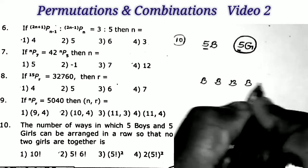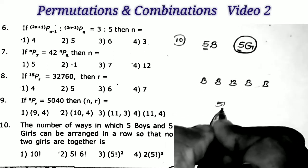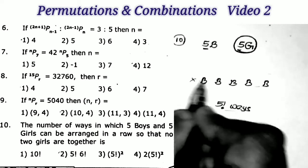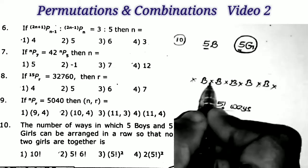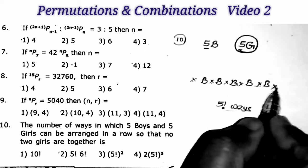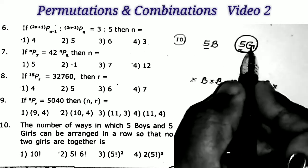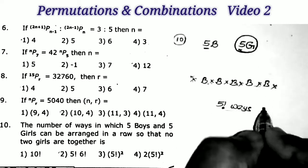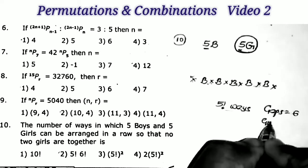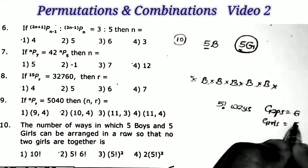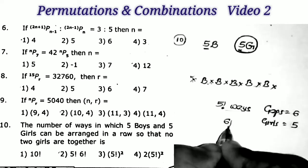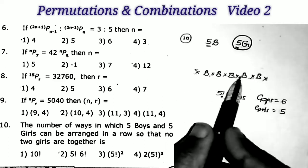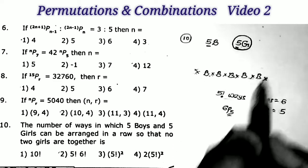We have five boys: one, two, three, four, five. We can arrange the five boys in five factorial ways. Now, how many gaps do we have between the boys? One, two, three, four, five, six — between the boys we have six gaps. Now we have to arrange the girls in these gaps. Number of gaps is equal to six, girls is equal to five. We arrange the five girls in the six gaps, which can be done in 6P5 ways.